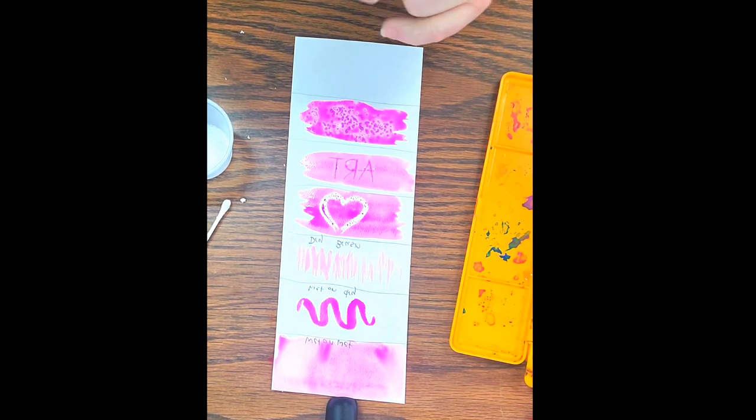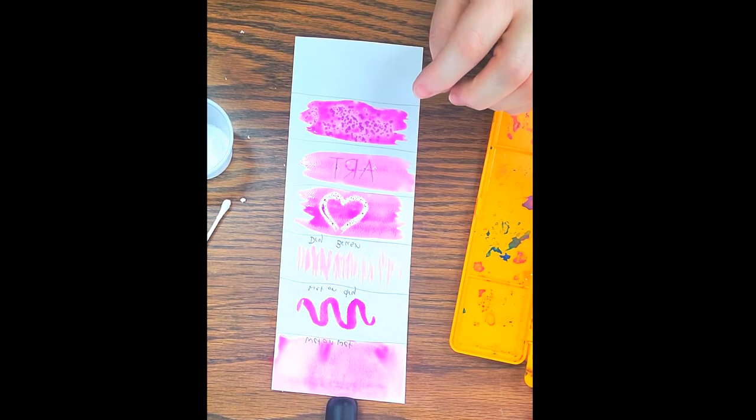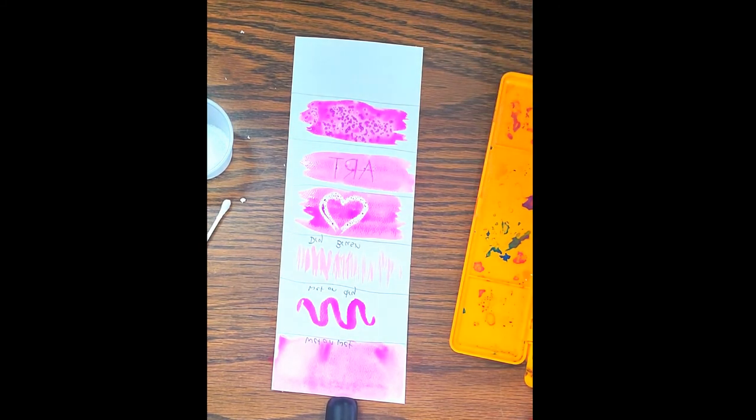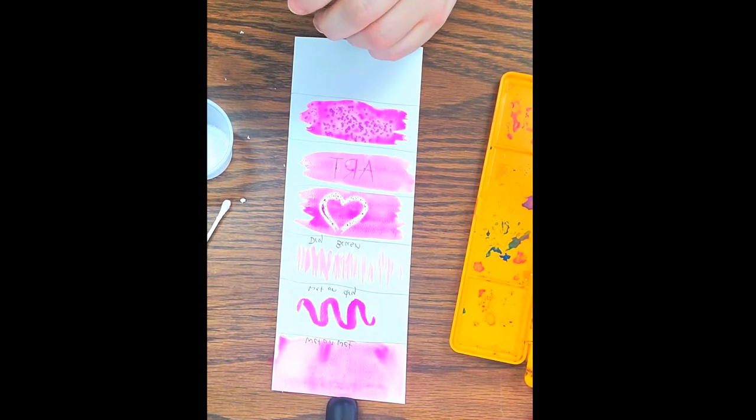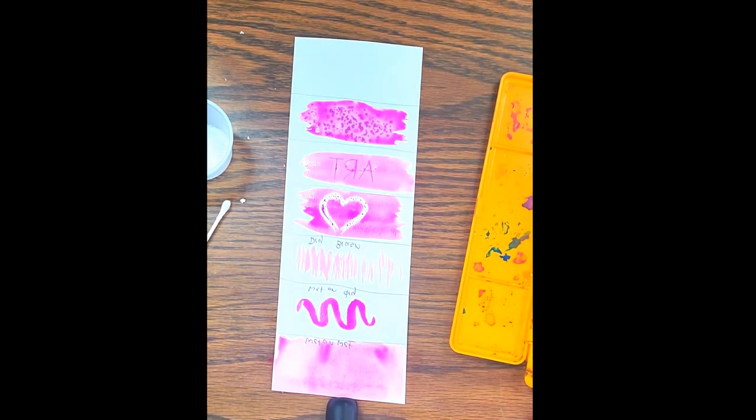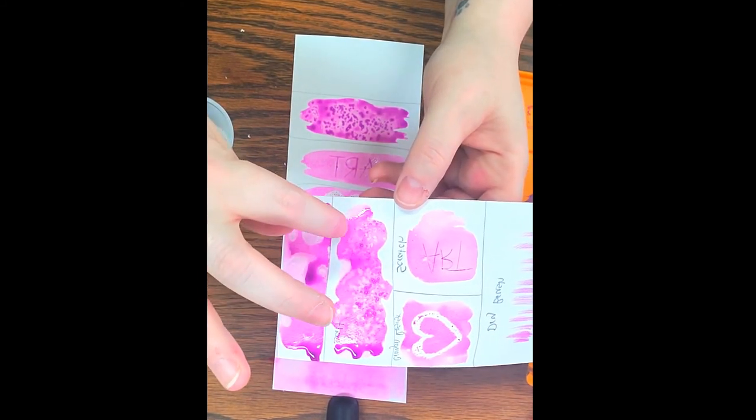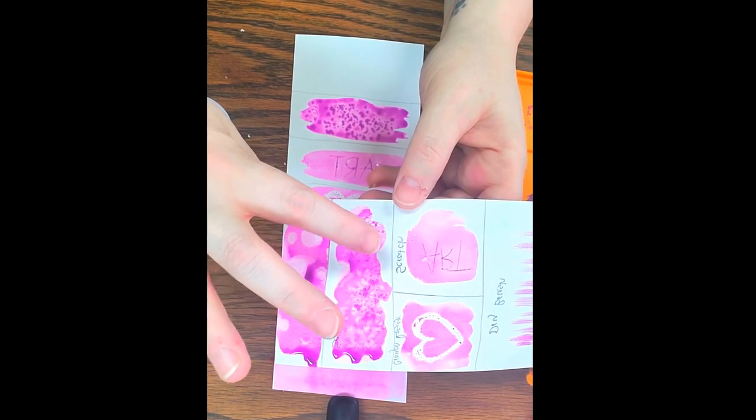And what that does is wherever the salt is, it's sucking up the pigment. So wherever the little pieces of salt are, it will create like a starburst or white effect - kind of good for snow or rain or just a good texture effect. All right? And you can't really see the whole effect until it's dry. When it's dry, you sweep off the salt and you can see it. You can kind of see what it looks like in here - this one's not quite dry, but you can see it's starting to do those crystallized, sparkle, or little star-shaped white sections where the salt is. Okay?